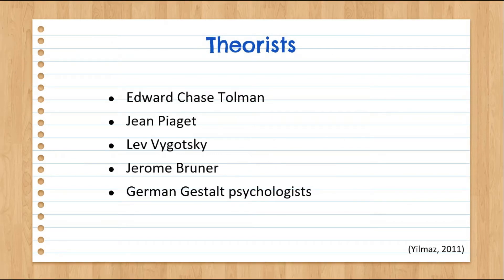Some big names in cognitivism are Edward Chase Tolman, Jean Piaget, Lev Vygotsky, Jerome Bruner, and German Gestalt psychologists. Tolman is often credited as the pioneer of the cognitive movement in the 1920s, with experiments involving rats navigating mazes. He found that the rats knew how the maze was structured because they developed mental maps of it — and they did this without the reinforcement we would see in behaviorism.